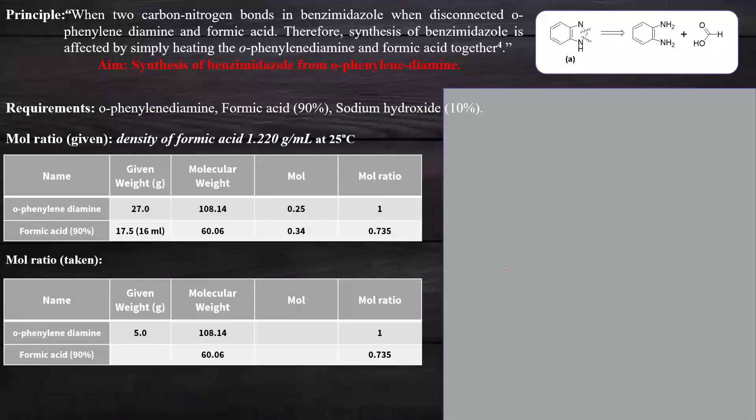Now we will switch to our main section: the synthesis procedure and principle of benzimidazole. When carbon-nitrogen bonds of benzimidazole disconnect, we get ortho-phenylenediamine and formic acid. Therefore, the synthesis of benzimidazole is affected by simple heating of ortho-phenylenediamine and formic acid together.